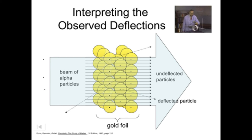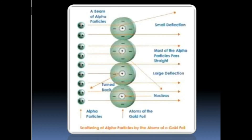A very few particles were bounced back. Most of the alpha particles penetrating the gold foil were undeflected, and very few showed a slight deflection. The positive charge passed through gold atoms undeflected, meaning the particles did not change direction and were traced on the zinc sulfide screen, making an image.